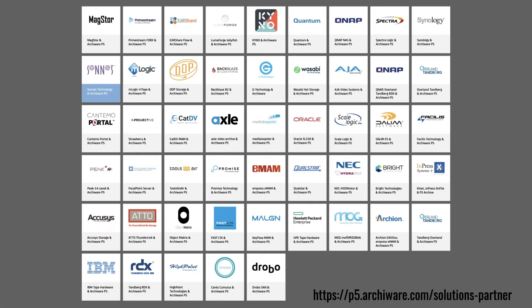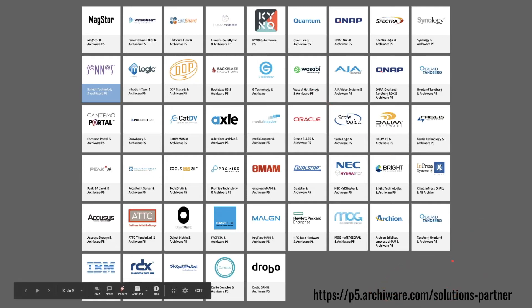These are all the vendors we have integrations with or directly support. There are MAMs like Axel and CatDV, storage vendors like Spectra, QNAP, and Synology, and MAMs like Kino. There are direct integrations allowing RQWare to drive these MAMs or be driven by them, or they are storages we directly support. Visit the URL shown to see all details — there's a page behind each one of those icons.